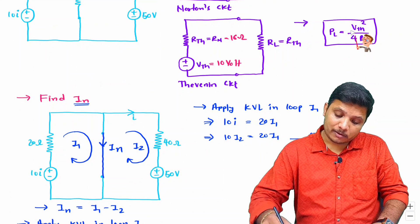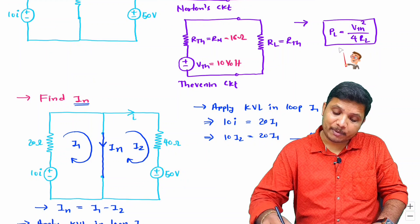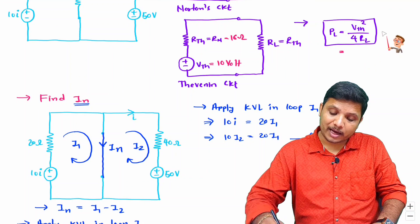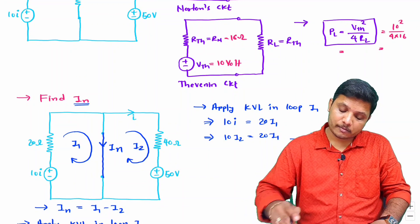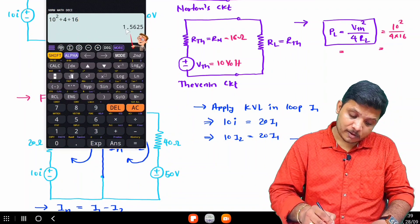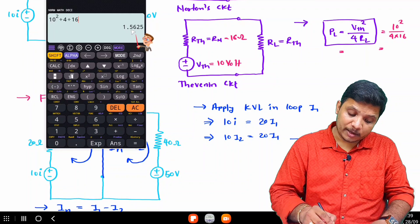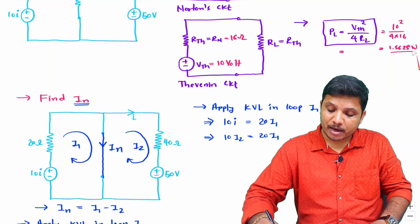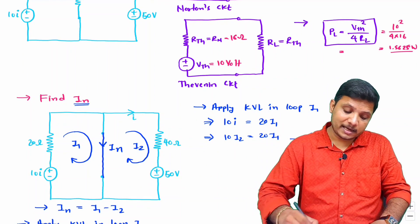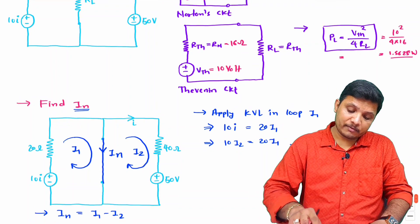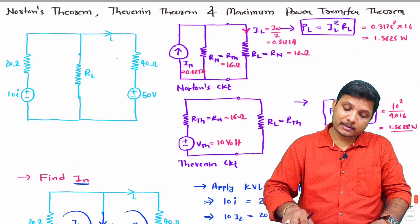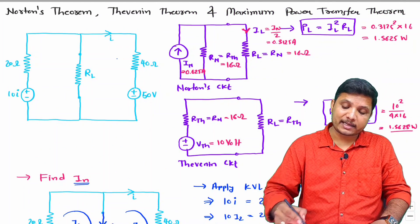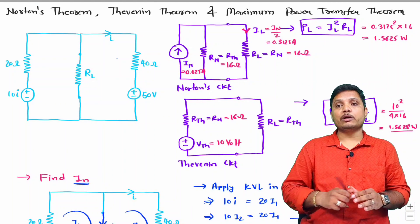Now solving using the Thevenin circuit formula: P_L equals V_th squared divided by 4 R_L equals 10 squared divided by (4 times 16) equals 100 divided by 64 equals 1.5625 watts. By both theorems, we get the same maximum power transferred to the load.